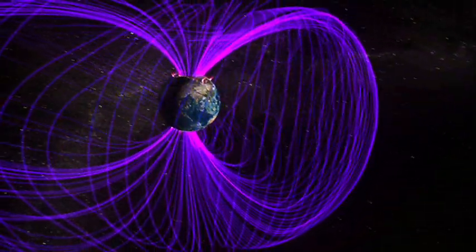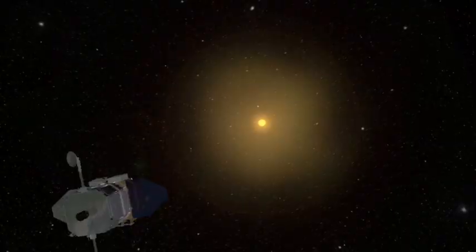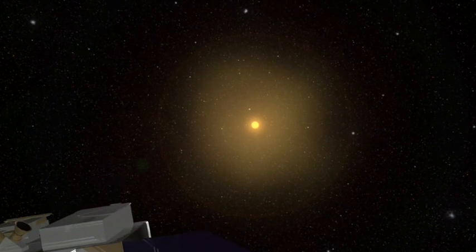At the same time, HMI will produce maps of the magnetic field of the Sun. We're all familiar with the magnetic field of the Earth. We use our compasses to point our way with that. On the Sun, the magnetic field is much more complicated.